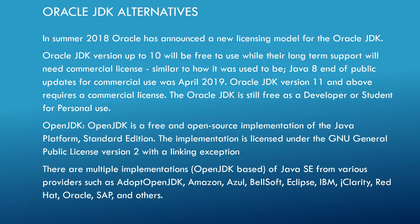OpenJDK is the better alternative for Oracle JDK. OpenJDK is a free and open-source implementation of the Java Platform Standard Edition. The implementation is licensed under the GNU General Public License version 2 with a linking exception, meaning the GNU license requires source code to be shared, but the linking exception provides the provision not to share the source code.